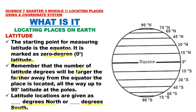The starting point for measuring latitude is the equator, marked as 0 degrees latitude. The number of latitude degrees will be larger the farther away from the equator the place is located, all the way up to 90 degrees latitude at the poles. Latitude locations are given as degrees north or degrees south. To the north of the equator, lines of latitude are marked with numbers followed by a degree sign and the letter N, symbolizing north. The first line north of the equator is 15 degrees north, then 30, 45, 60, 75, and 90 degrees north.